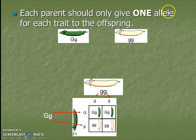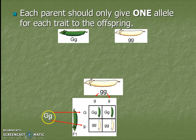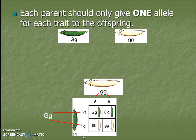Each parent should only give one allele for each trait to the offspring. So let's say these are the two different parents: a green bean and a yellow-green bean. This one is going to either give a little g or that little g — these represent the two different alleles separating. That's why we put them over the different columns. Here we have the big G and little g of this green one. The big G can be inherited or the little g can be inherited from this parent. They will not inherit both from the same parent. That's what the law of segregation means.